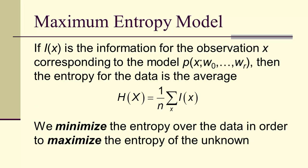So if we have the information for an observation x, corresponding to some model, then we can take the average information over the data based on the probability model.